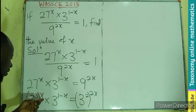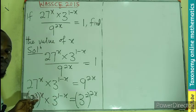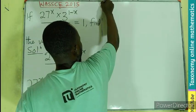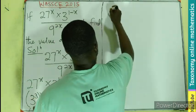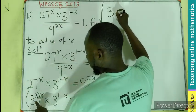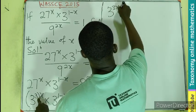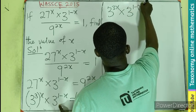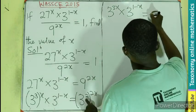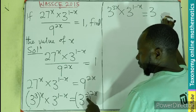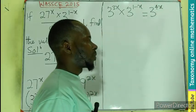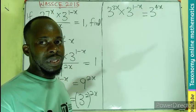So we open this bracket to multiply the power of x. That means our expression becomes 3^(3x) times 3^(1-x) equals 3^(4x). So this is an equation.